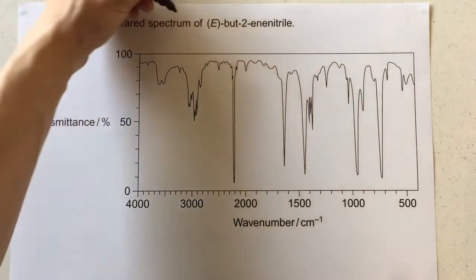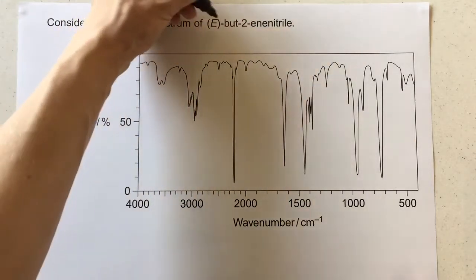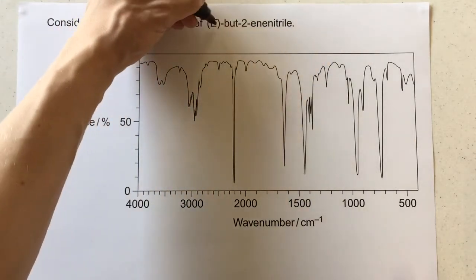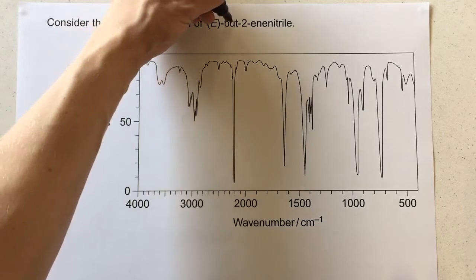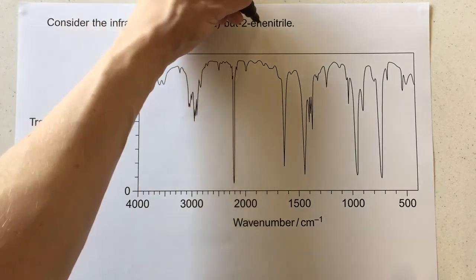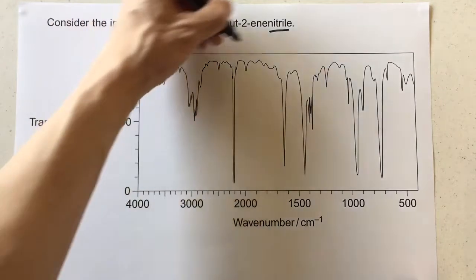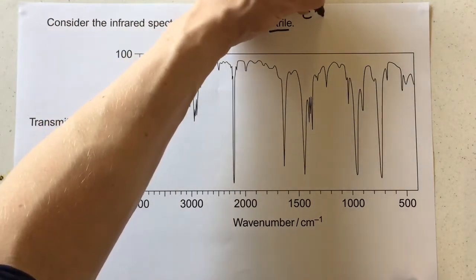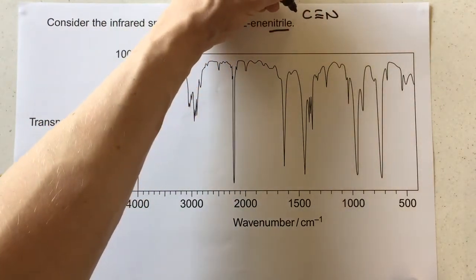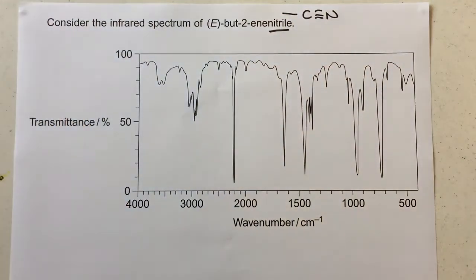If you're a lower 6 student looking at this, you'll recognise certain parts of the systematic naming here. We've got some stereoisomerism of the E, the 2-en here to describe that alkene, but then you're possibly looking at this nitrile bit and thinking, what is that? Well, it's a carbon triple bonded to a nitrogen, and it's always carbon number one in the chain when it's present.